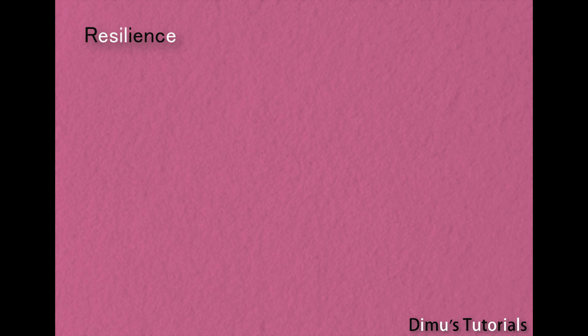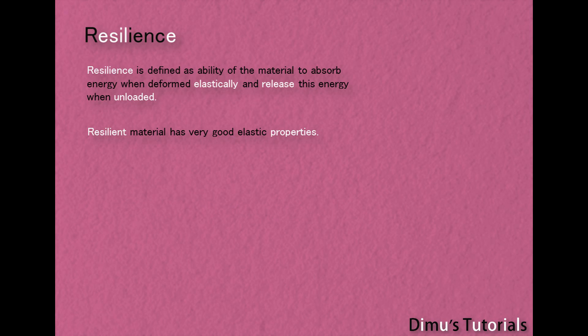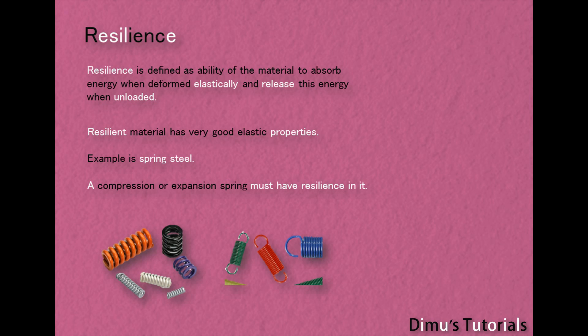Resilience. Resilience is defined as an ability of the material to absorb energy when deformed elastically, and release this energy when unloaded. Resilient material has very good elastic properties. An example is spring steel — a compression or expansion spring must have resilience in it.